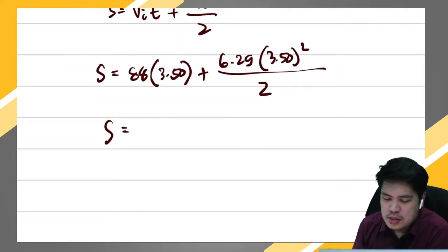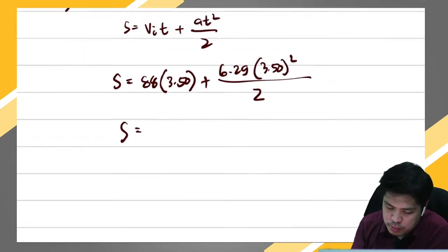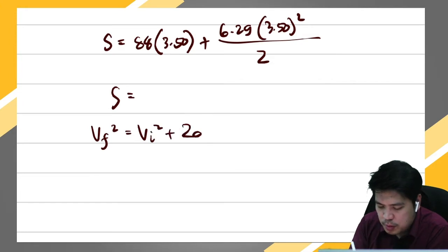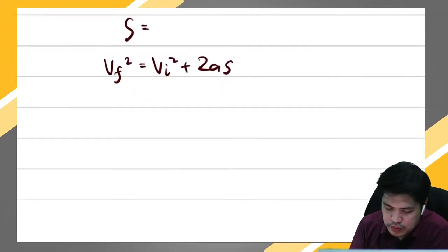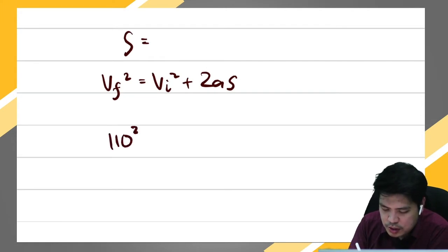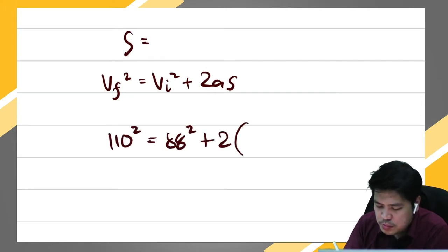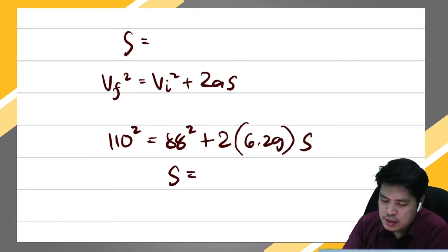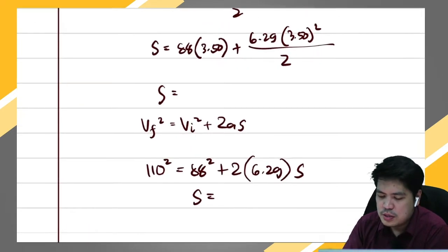Using: s = 88(3.50) + 6.29(3.50²)/2, you get the distance. You can compare your answer using the third formula: vf² = vi² + 2·a·s, with acceleration 6.29 times the distance, which should give the same answer.